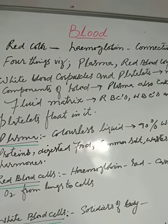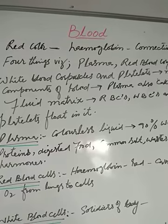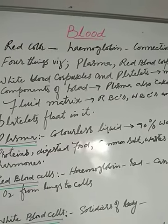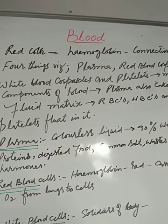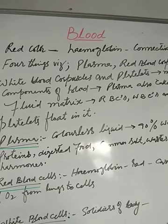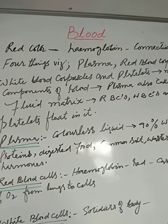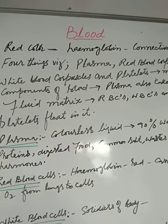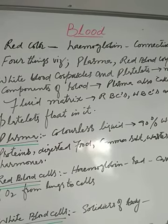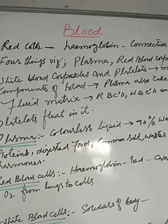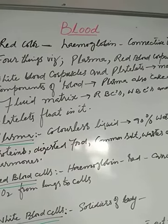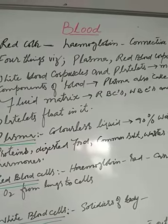Blood consists of four main components. The main components of blood are plasma, red blood corpuscles or red blood cells or simply RBCs, white blood corpuscles or white blood cells or simply WBCs, and platelets.